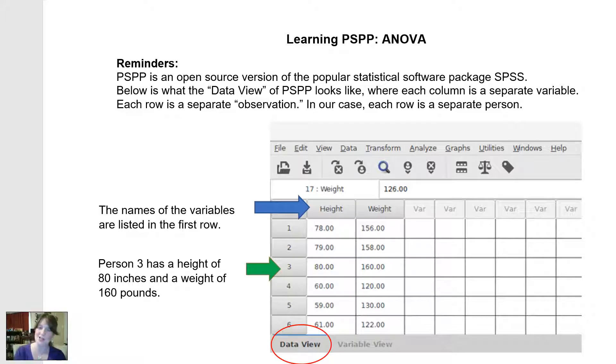As a reminder, PSPP is laid out a lot like Excel, where we have variables, characteristics that can be different among people along the columns, and different people represented along the rows. You have a choice between data view, where you can see people's actual data, and variable view, where you can see the names that we call the different variables.